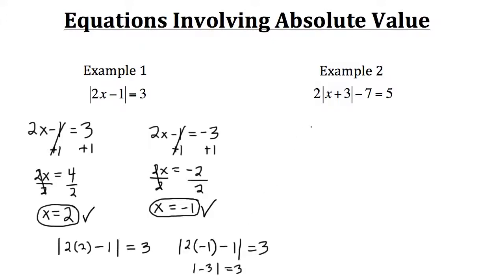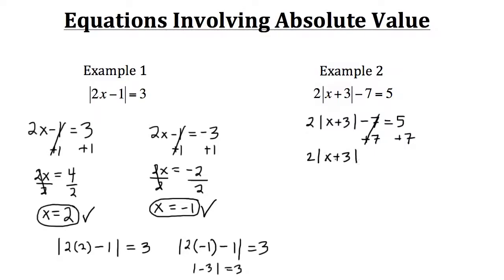Now let's look at example 2. Here we need to do a few steps first before we can solve it. We want to get the absolute value expression by itself first. To do that we need to get rid of the negative 7, so we add 7 to both sides. That leaves us with 2 times the absolute value of x plus 3 equals 12. Now we divide both sides by 2 to cancel the 2, and that leaves us with the absolute value of x plus 3 equals 6.